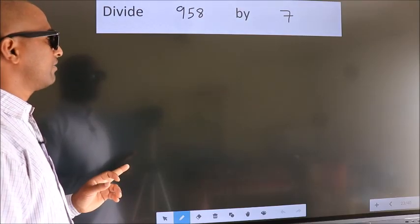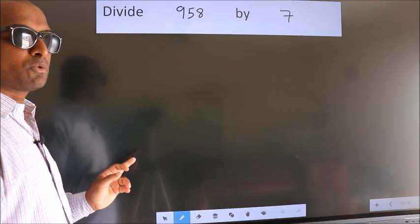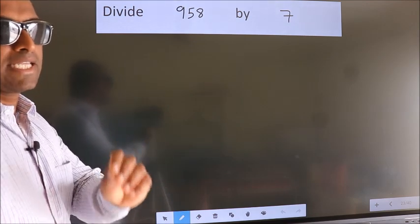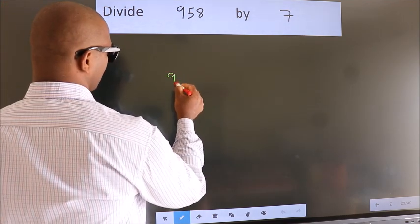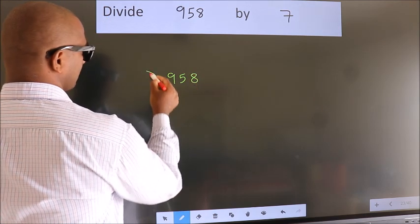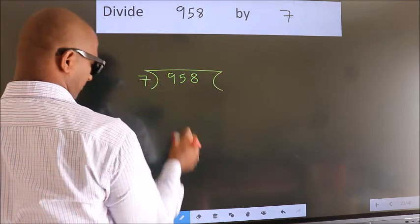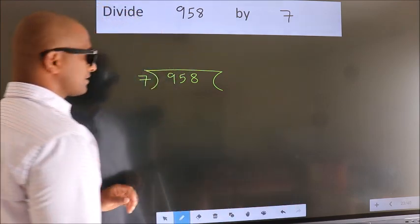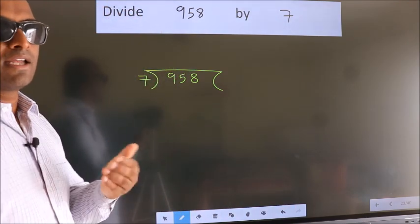Divide 9.58 by 7. To do this division, we should frame it in this way: 9.58 here, 7 here. This is your step 1.